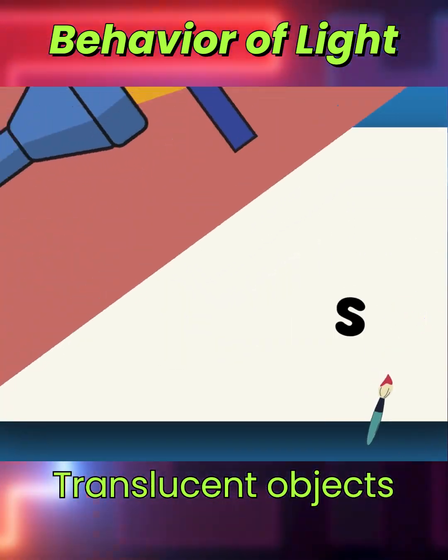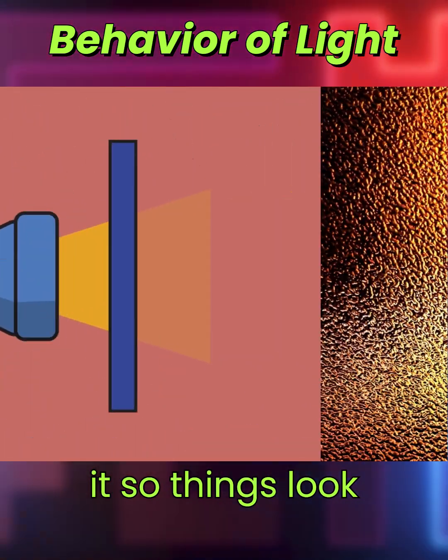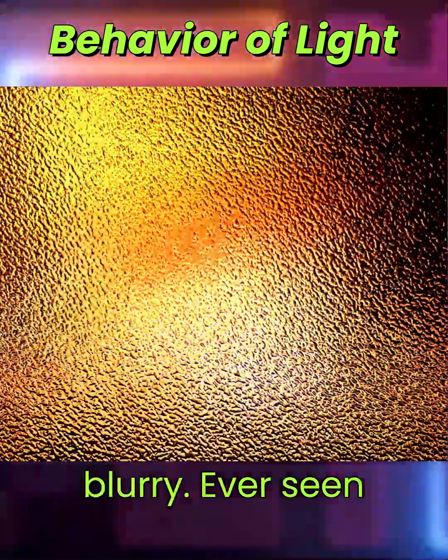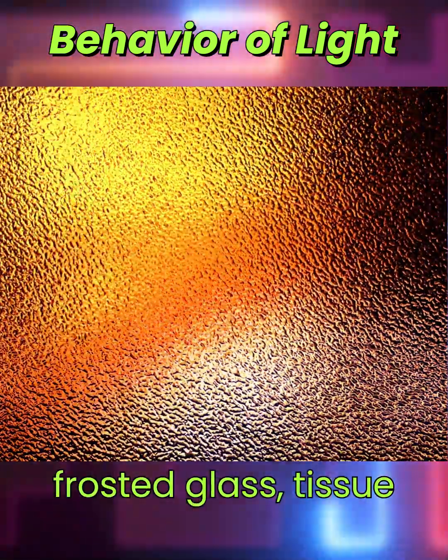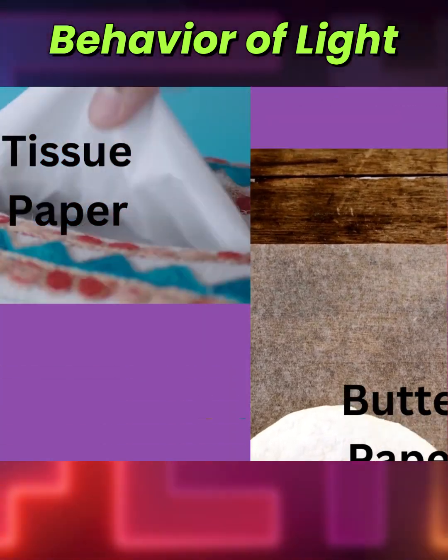Translucent objects let some light through but scatter it, so things look blurry. Ever seen frosted glass, tissue paper, or butter paper? That's translucent.